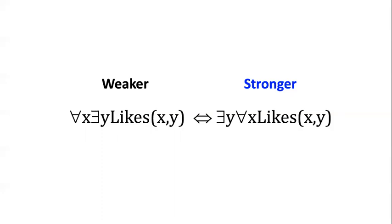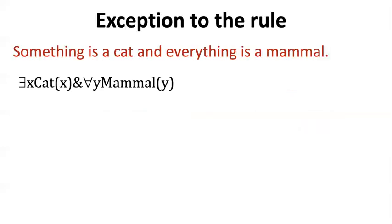Now, what we've been talking about is the fact that when you have mixed quantifiers, you cannot necessarily reorder them. There's one exception to this rule though. So this is important to also understand. The reason why everybody likes somebody cannot be reordered is because the X and the Y are in a relation to each other.